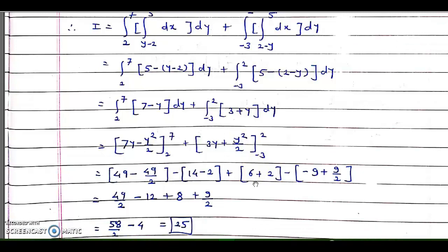So this way we can change the order of integration. The concept is: if the given strip is vertical, we have to consider horizontal, and vice versa. While doing so, we may require partitioning the region.